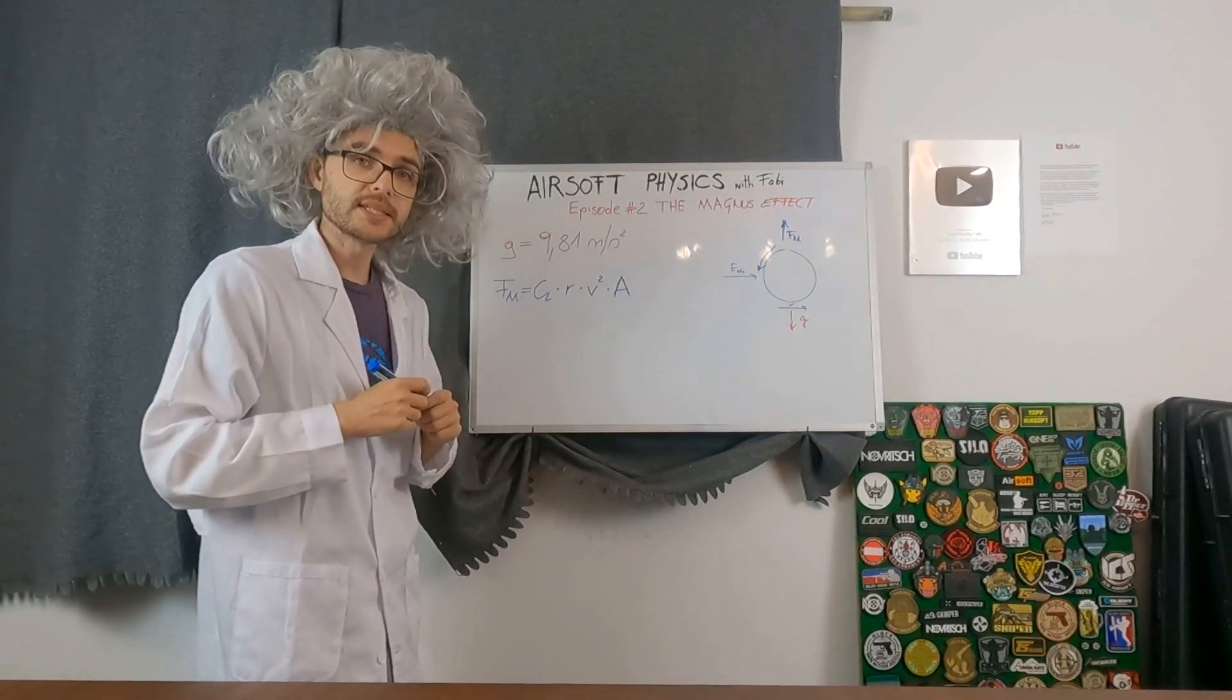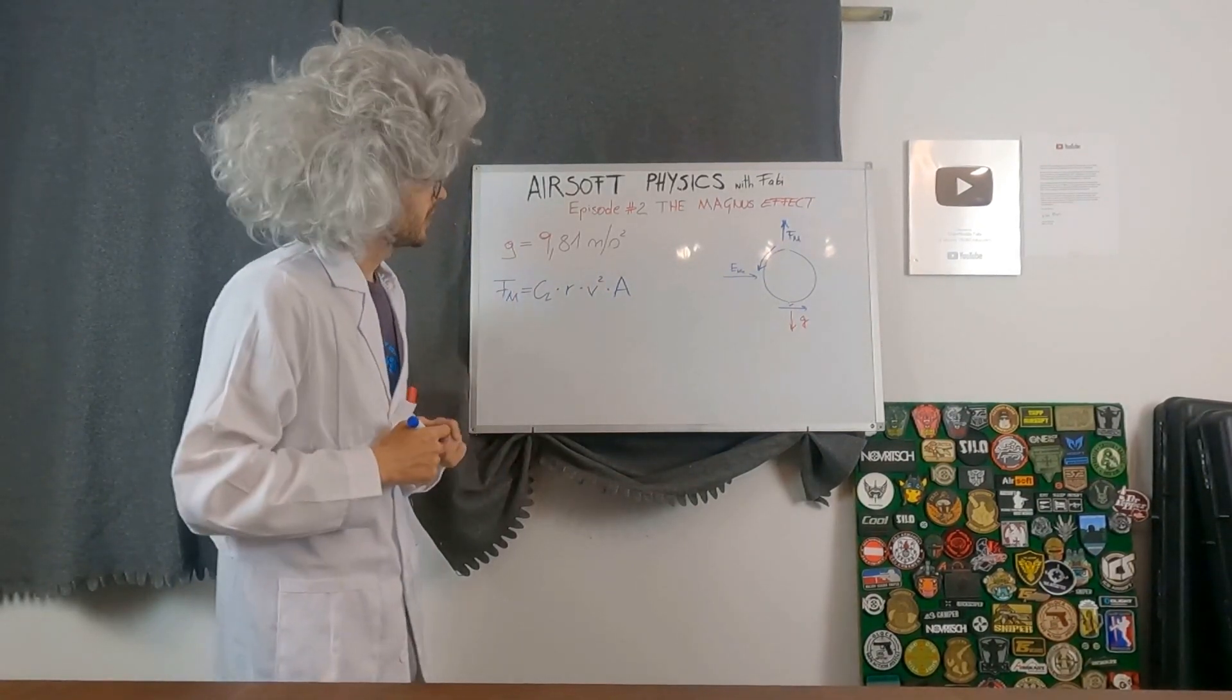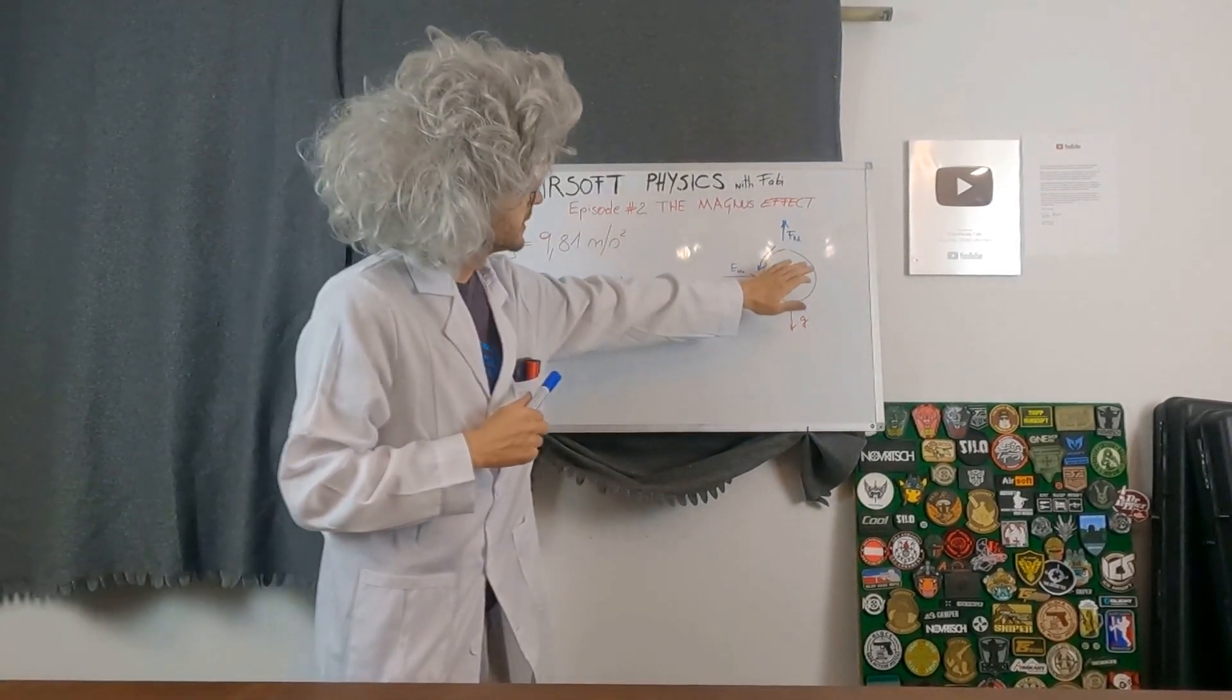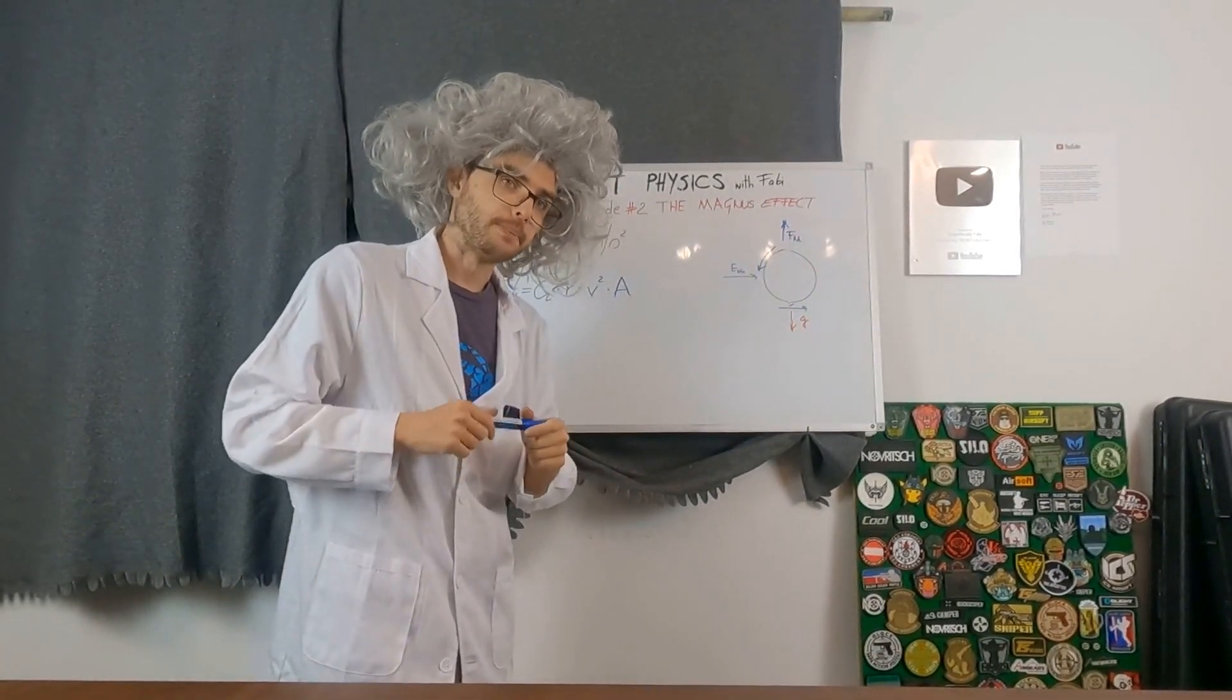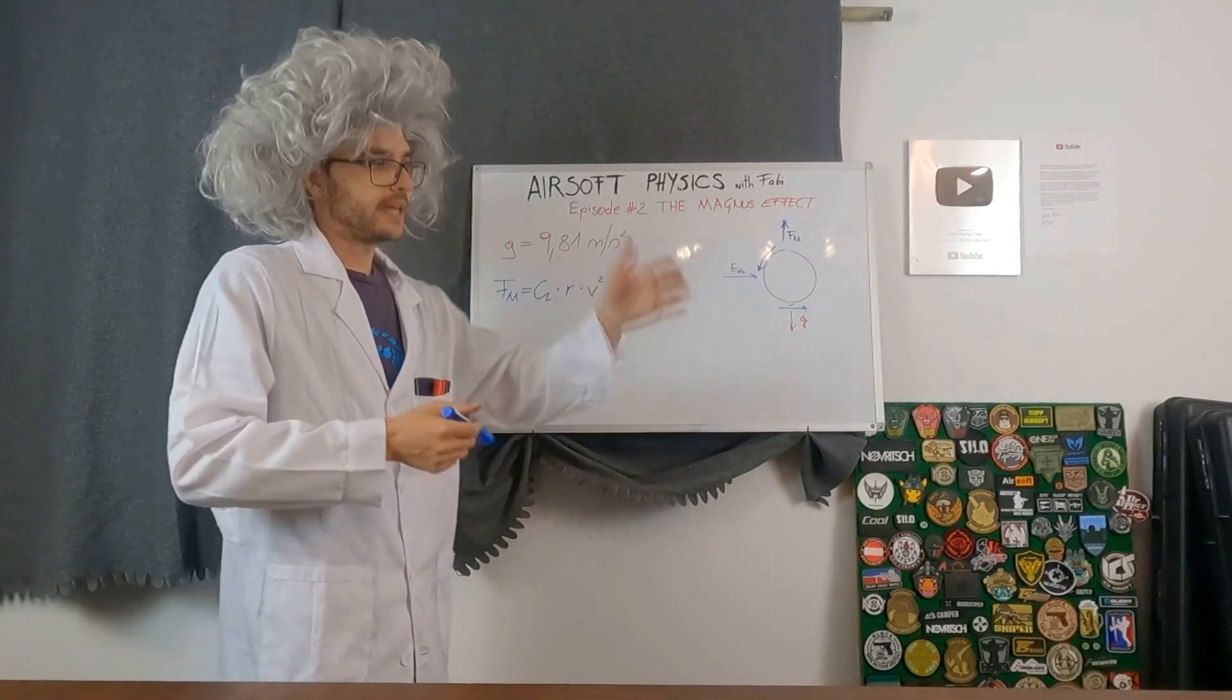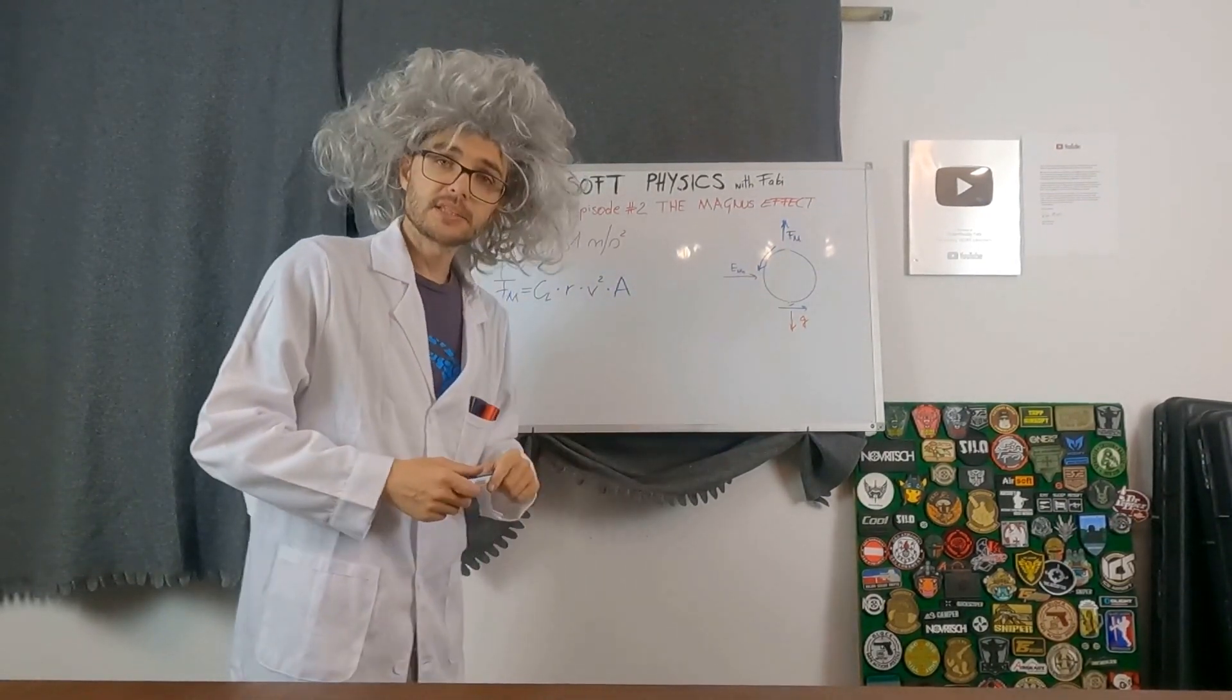The lift coefficient is quite hard to explain and not as easy to calculate. But all you need to know about the lift coefficient is that it is basically a ratio of the spin of the BB and the actual speed of the BB. So with this equation, we will be able to calculate our Magnus force at any given time of the BB's travel, if we would know how fast it spins.